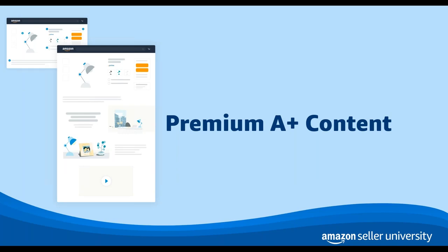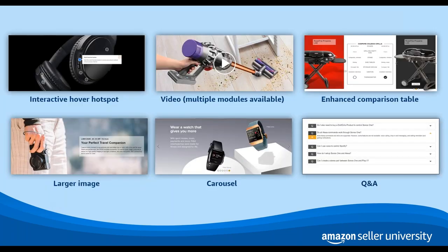Upgrading to premium A-plus lets you use larger, higher-quality images than you can with basic A-plus, and it also gives you access to six additional module types. Those module types are interactive hover hotspots, the video carousel modules, enhanced comparison tables, larger images, the carousel modules, and the Q&A module.